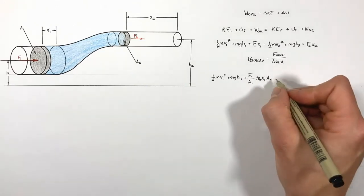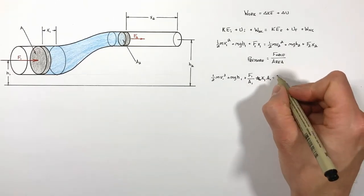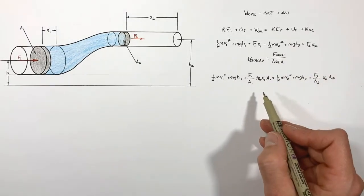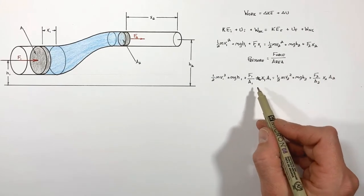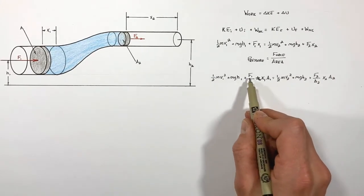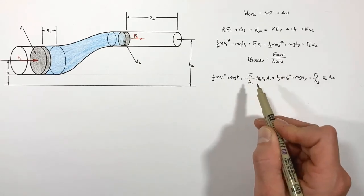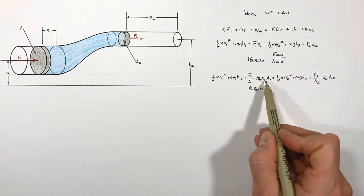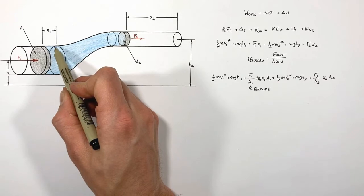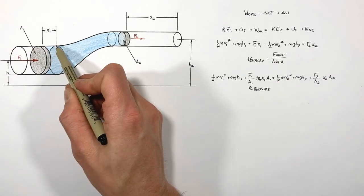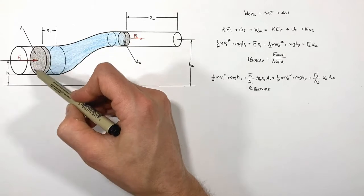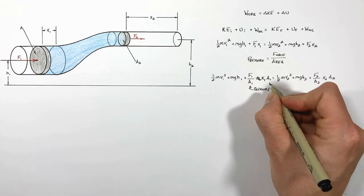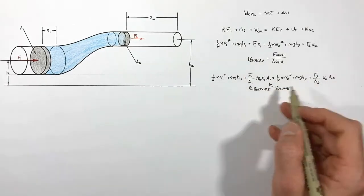Writing out the right-hand side of the equation with a similar substitution, we can now identify F over A as pressure, and we can note that the distance the piston moves through the tube multiplied by the cross-sectional area of the piston is a volume. When we rewrite the equation using these substitutions, we get pressure times volume terms on both sides.